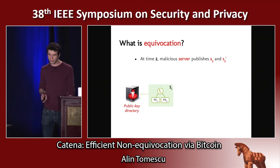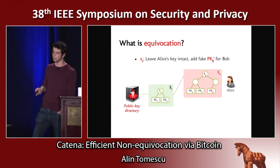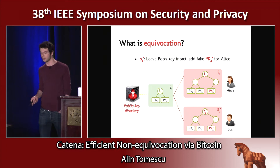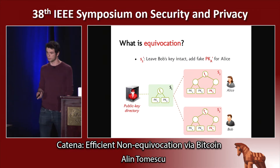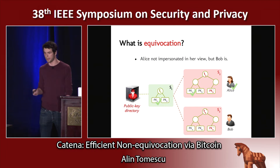Now, what is equivocation? Well, at time two, the malicious server could simply publish two digests, s2 and s2 prime. In s2, Alice's key is left intact but Bob is impersonated. In s2 prime, Bob's key is left intact but Alice is impersonated. So when Alice checks in her view, everything seems fine — her key is the same — however, Bob is impersonated there and Alice will use a fake key for Bob.